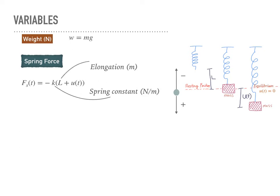We have elongation L, which is the distance from the end of the mass to the resting position, and u(t), which is the position of the mass by convention. The spring system acts on the mass by always trying to pull it back to the resting position, acting opposite to the position of the mass. That's why the spring force has a negative sign.